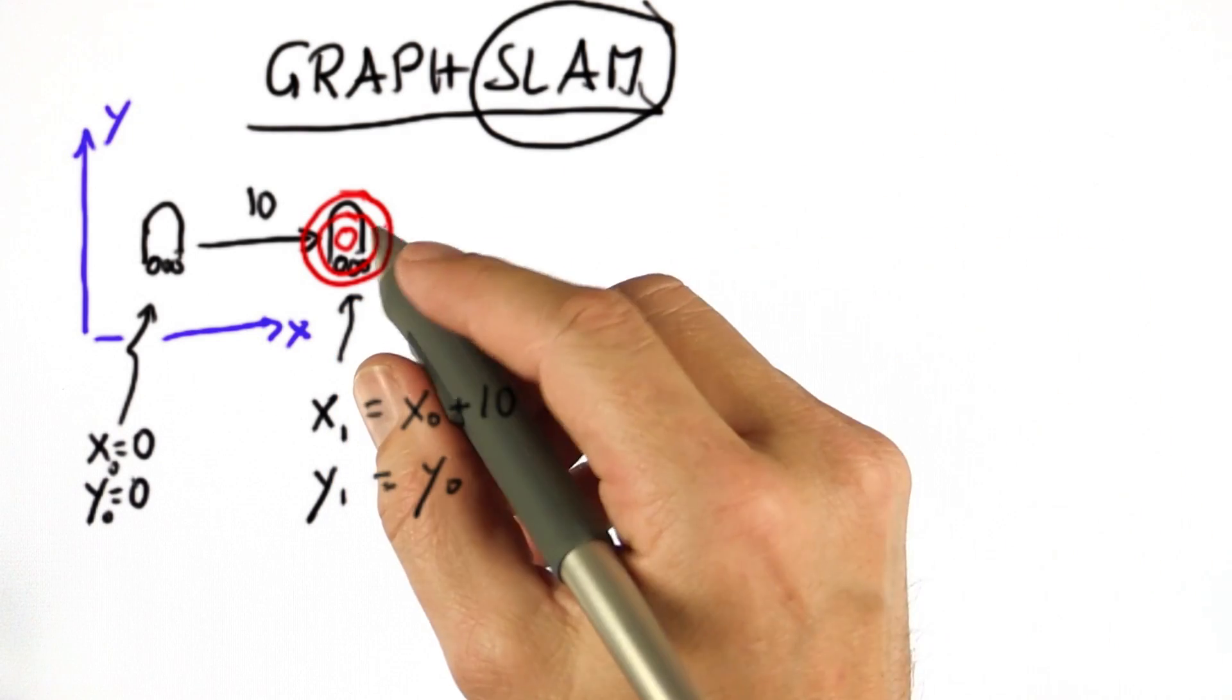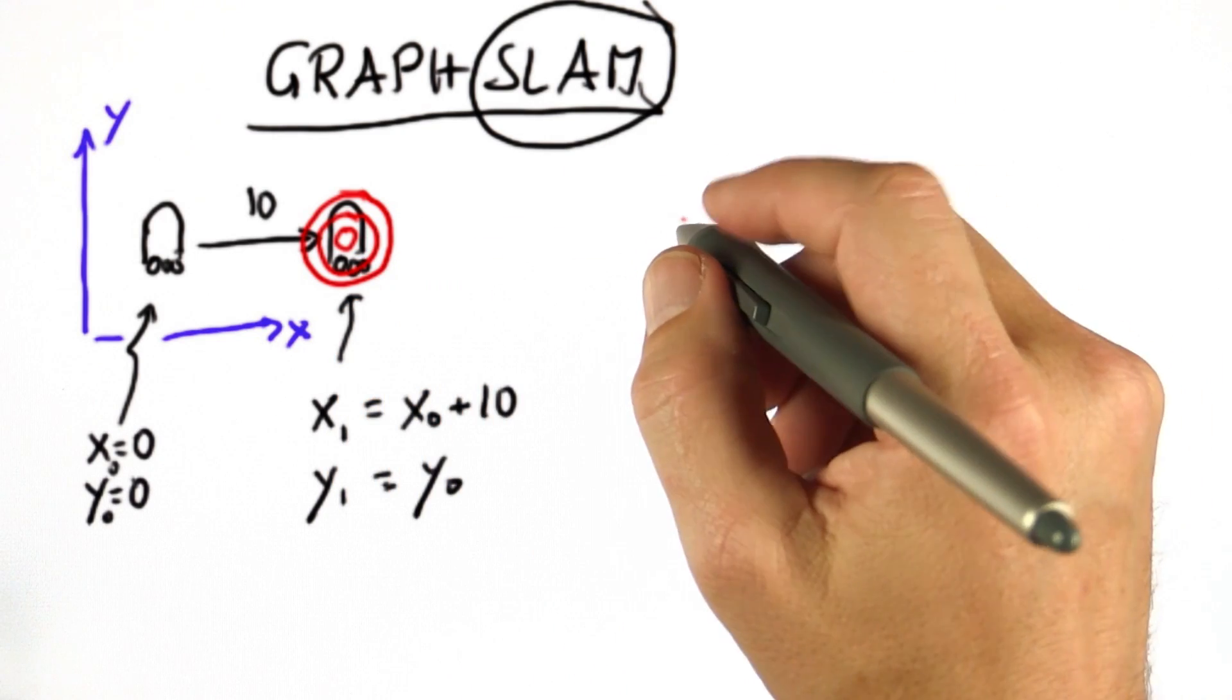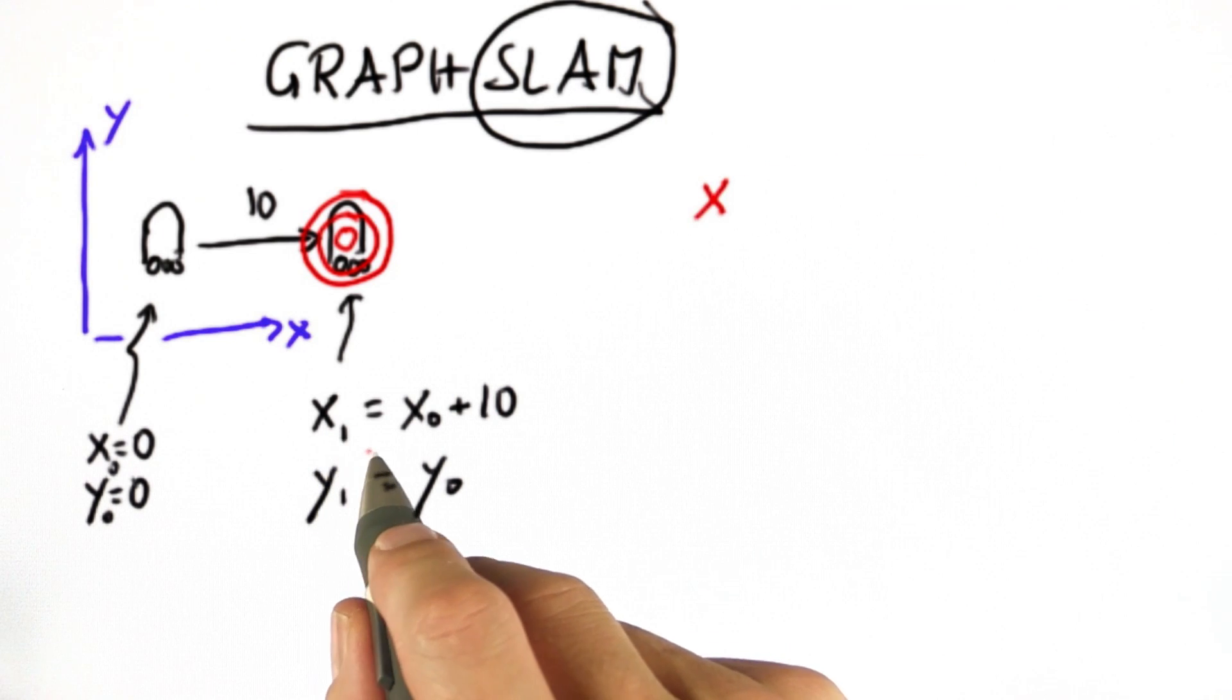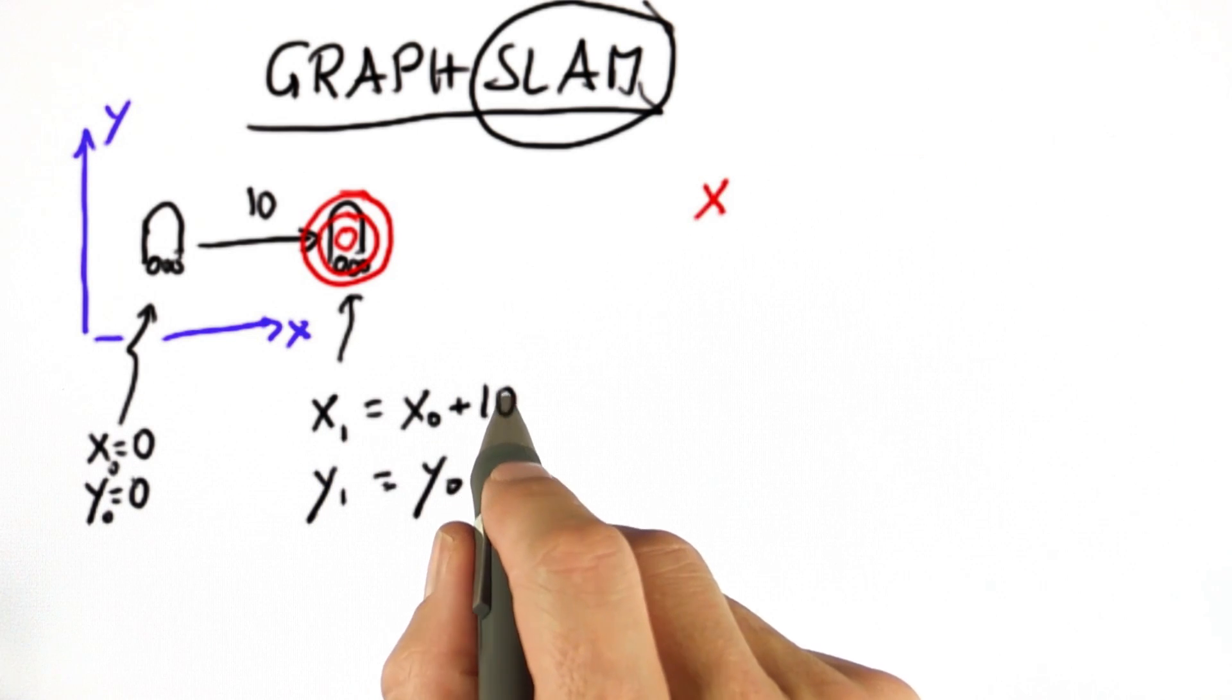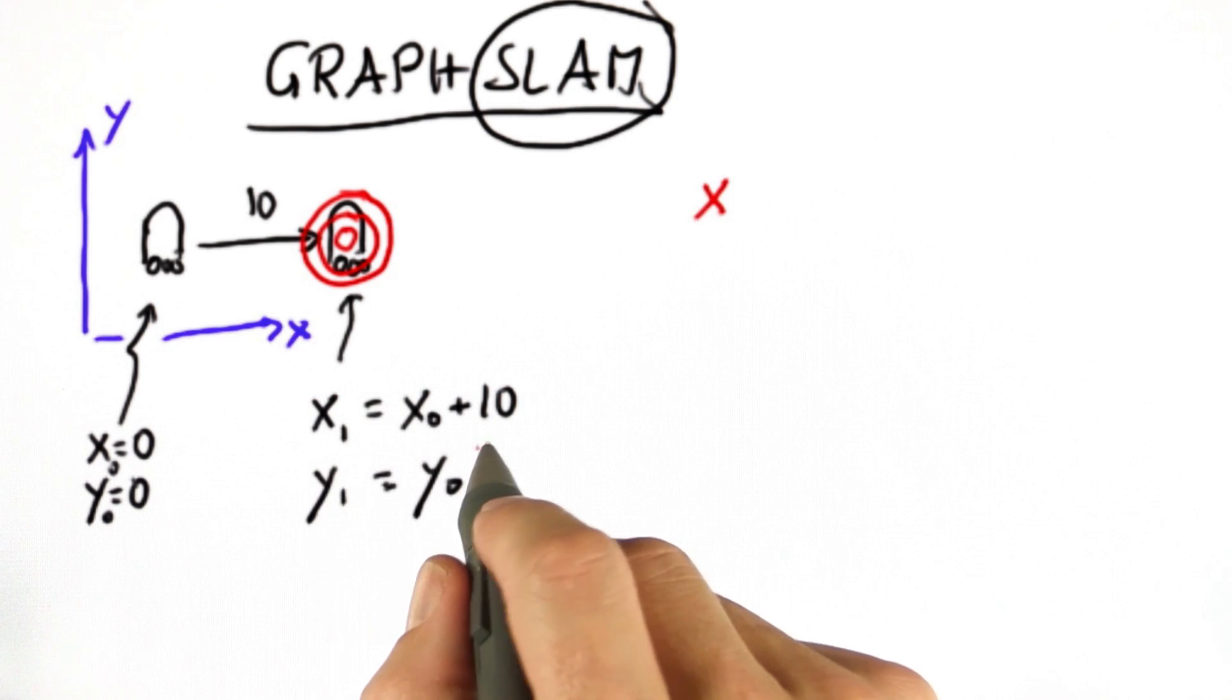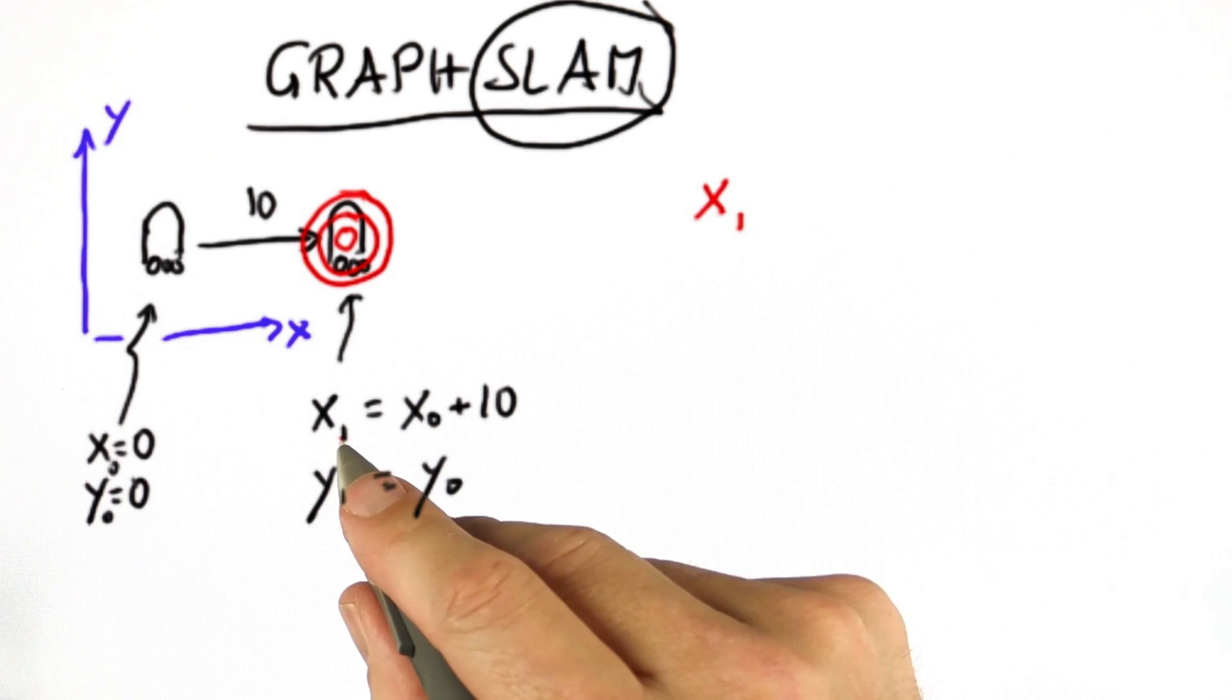Remember we worked out the math for this Gaussian? Here's how it looks like, just for the x variable. Rather than setting x1 to x0 plus 10, we try to express the Gaussian that peaks when these two things are the same. So if we subtract from x1,